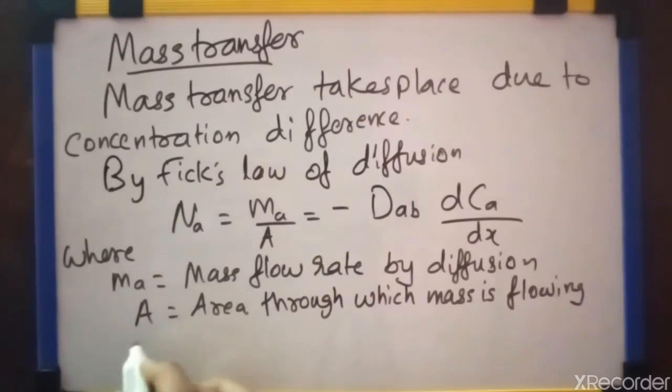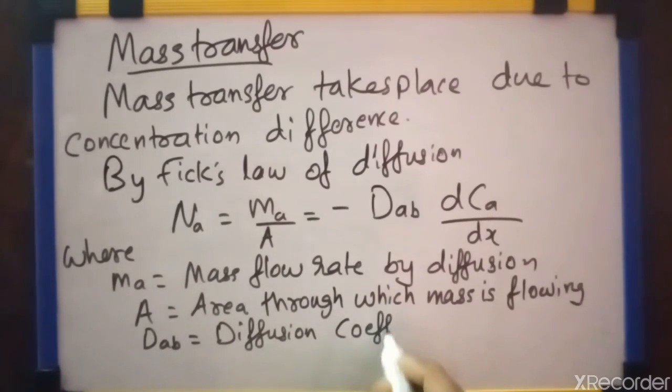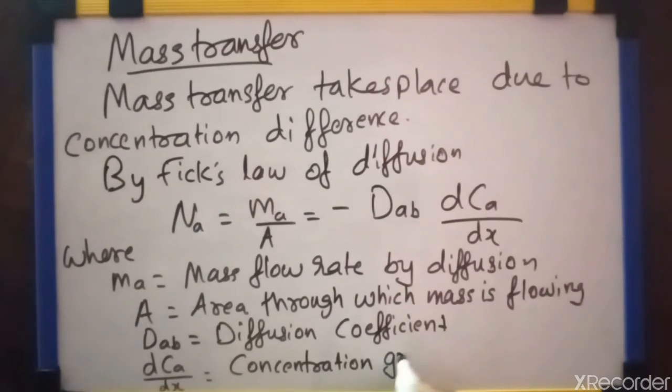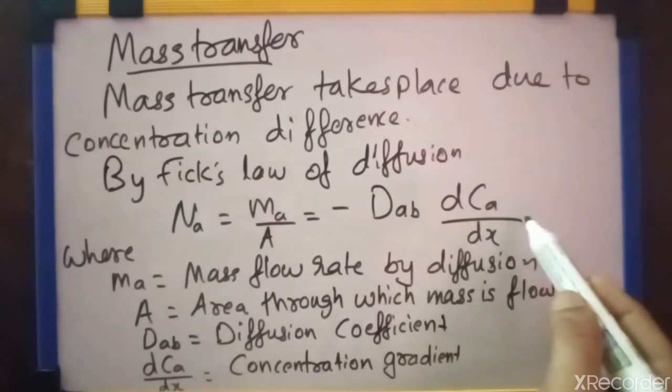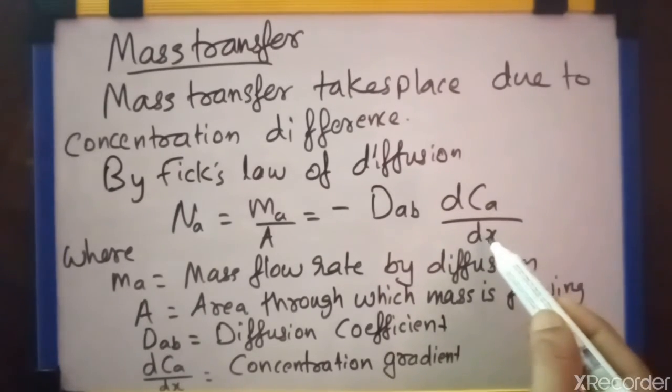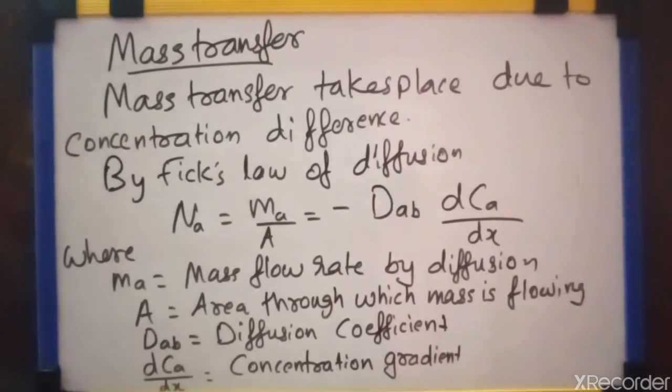Then dab is the diffusion coefficient, and dca by dx is the concentration gradient. Concentration gradient means concentration difference divided by distance between them.